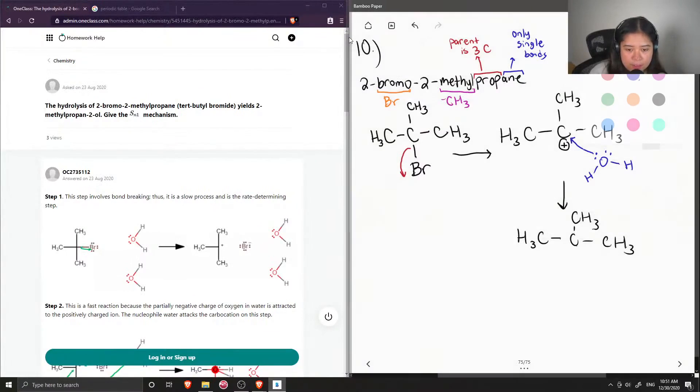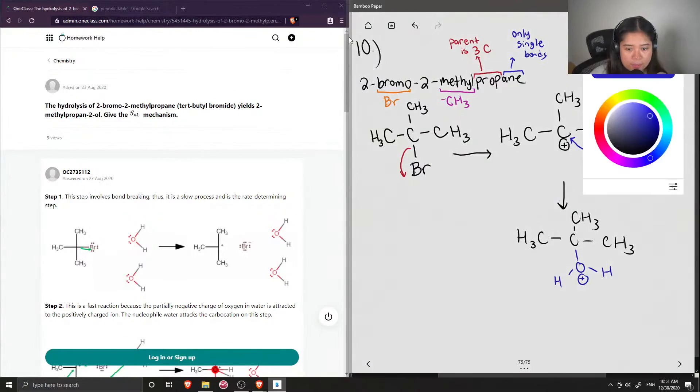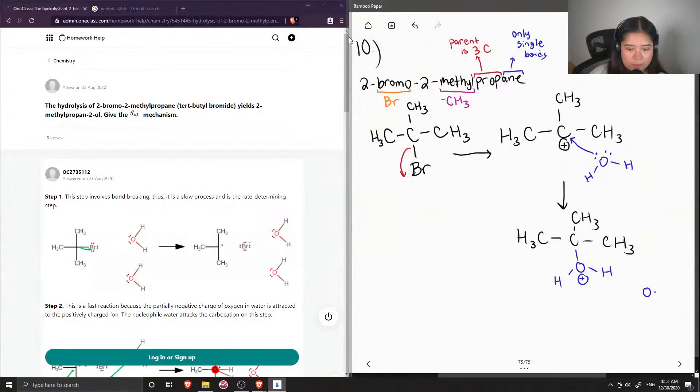That now has a water molecule attached, but this oxygen is now positively charged. So in order to relieve that positive charge, another water molecule can come in and deprotonate. So it removes one of the H atoms and this will neutralize that positive charge and this forms an alcohol group.